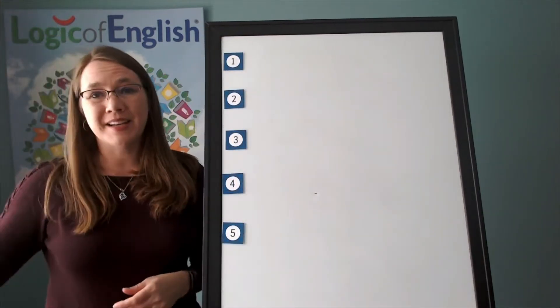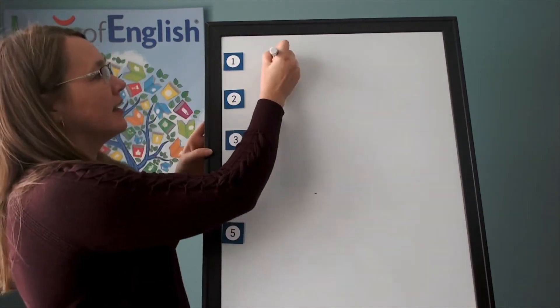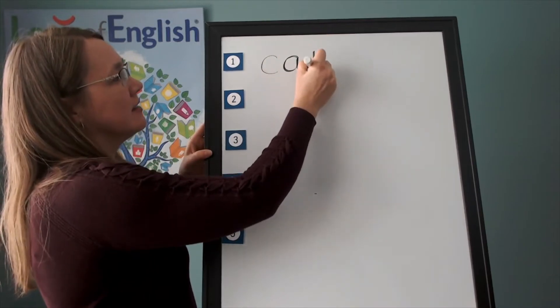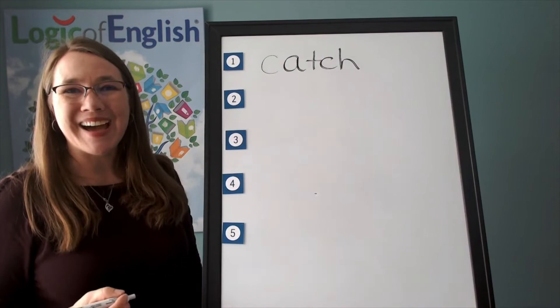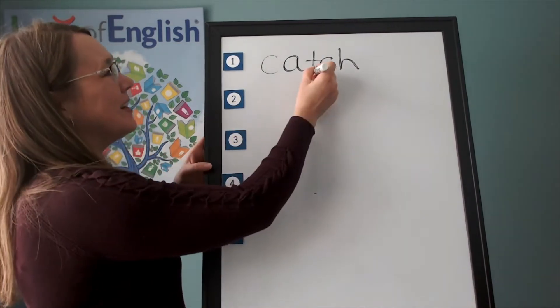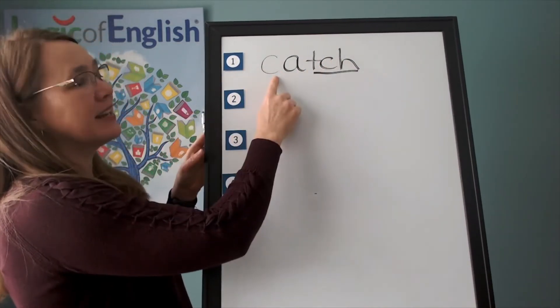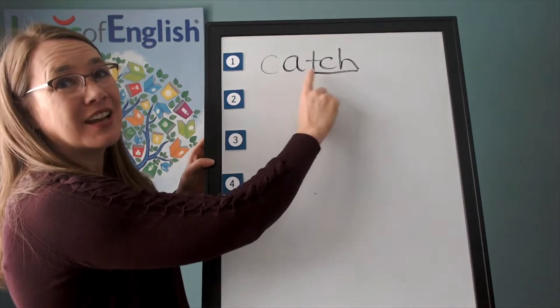All right. So let's go ahead and write catch again. C, a, ch. All right. And how will we mark catch? You're right. Well, underline the ch. Let's read it. C, a, ch. Catch.